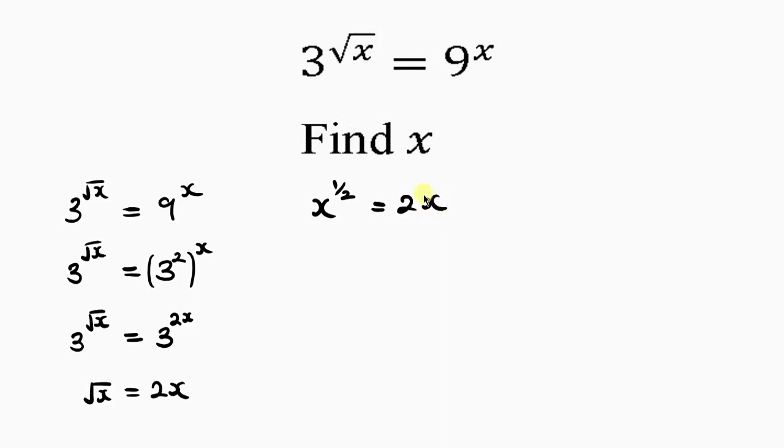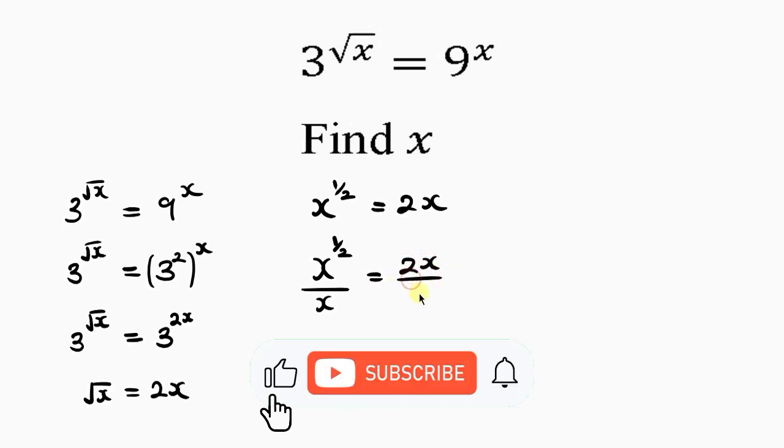In order to make this easy, we can divide both sides by X so that all X are on the left-hand side. So X to power one-half divided by X equal to 2X divided by X. This is X raised to power 1, and in indices, since the bases are equal, I can take one of the bases and subtract the powers if they are dividing. So half minus 1 gives you negative half.